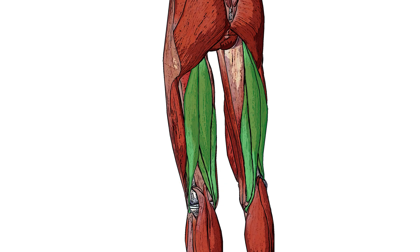You can see I've highlighted the hamstring muscles all together here in green, so we've got the biceps femoris muscle, then the semitendinosus muscle, and then the semimembranosus muscle. Now with only the semimembranosus highlighted, you can see the semitendinosus muscle is actually sitting on top, or superficial to, the semimembranosus muscle.